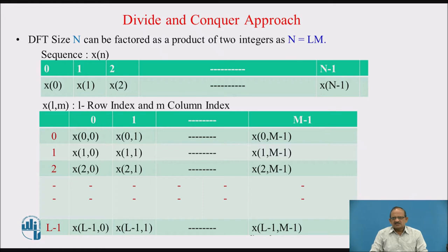Now let us see the calculation of N-point DFT by using the divide and conquer approach. DFT of size N can be factored as a product of two integers: N = L × M. To understand this, let us first represent the signal in a two-dimensional array.